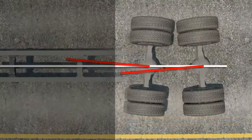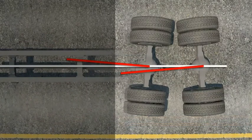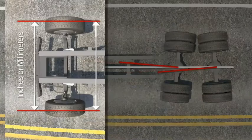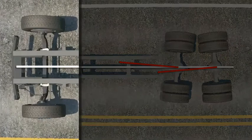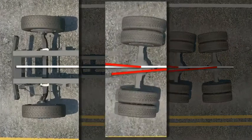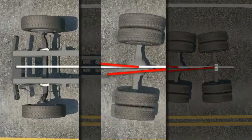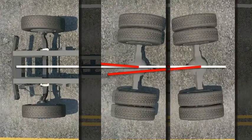The alignment condition of the rear wheels is even more important than the alignment condition of the front wheels. This is because misalignment at the rear will affect tread life of every tire on the vehicle.